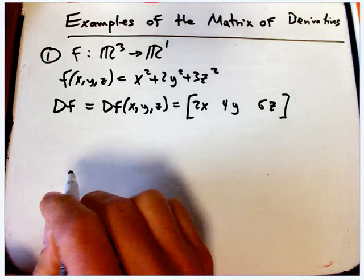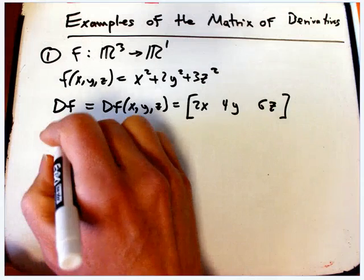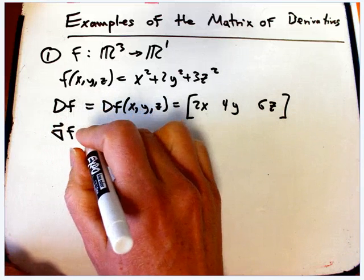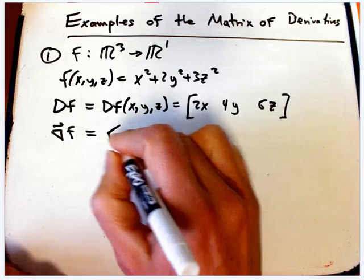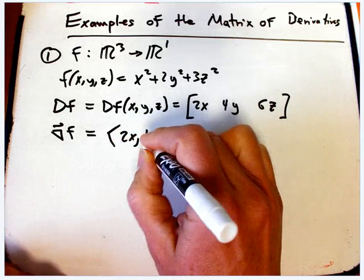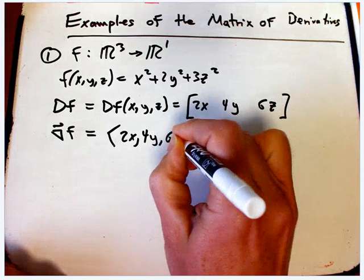And as I mentioned in another video, that's very similar to the gradient. The gradient, of course, is just an honest-to-God vector, like an arrow: 2x, 4y, 6z.